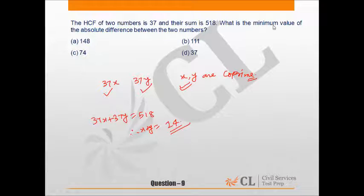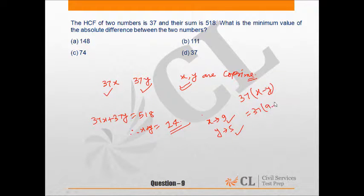Now what is the minimum value of the absolute difference between the two numbers. The minimum value between 37x and 37y would be in that condition in which the difference between x and y is minimum and x and y are coprime also. So x should be 9 or 5 and y should be 5 or 9 in any order. So the difference between two numbers would be 37 times 9 minus 5, that is equal to 148. Hence option A is our answer.